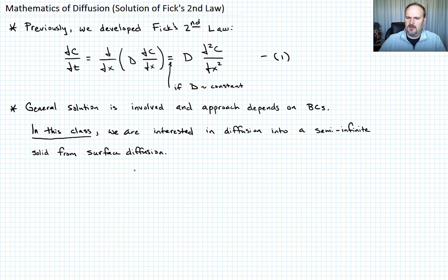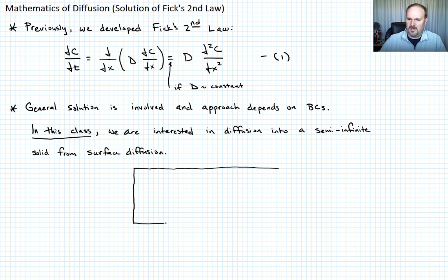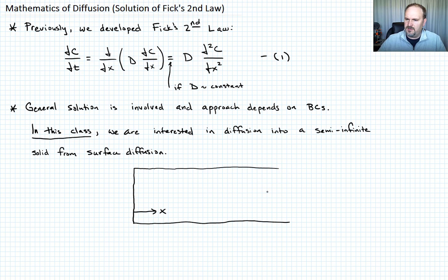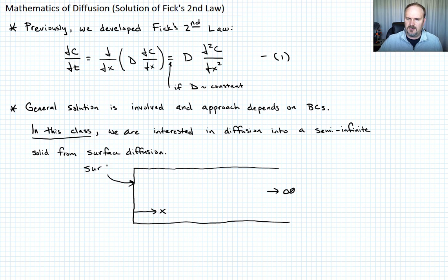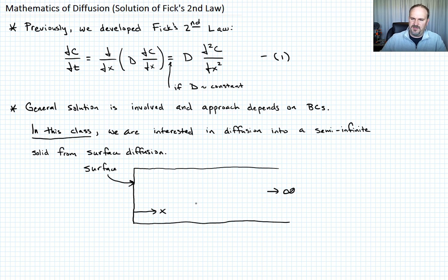So what does this look like? This is just an infinite bar that goes off to infinity but starts right here — that's why it's called semi-infinite, because it doesn't run infinitely in all directions. It starts at a spot and runs to infinity towards the right. We define position x going into the bar. What we're interested in is holding some concentration outside so that the surface concentration stays constant, and then asking how the concentration varies through the bar as a function of both position and time.